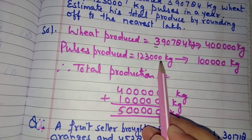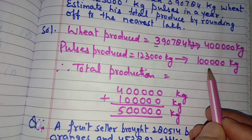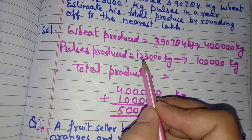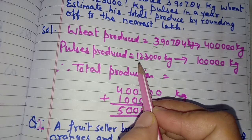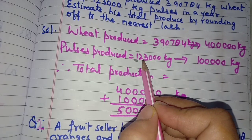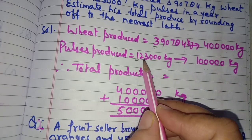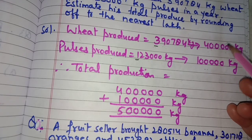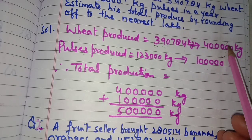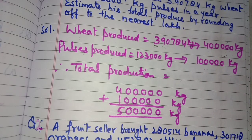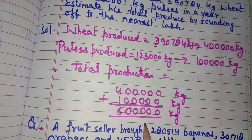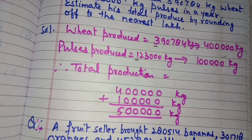Pulses produced: 1,23,000 kg. We round off to the lakhs place — the digit to the right is 2, which is less than 5, so 1 remains as it is and all the following digits become zeros, giving 1 lakh. Now we add the rounded figures: 4 lakh + 1 lakh = 5 lakh kg. So the estimated total produce of the farmer is 5 lakh kg of wheat and pulses.